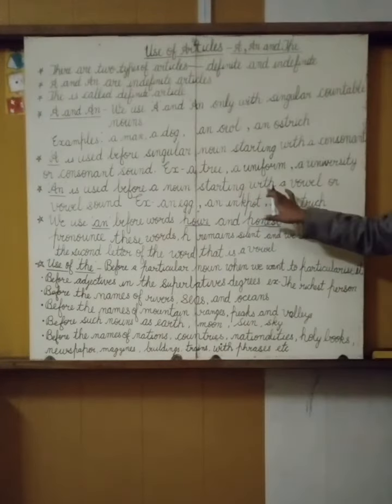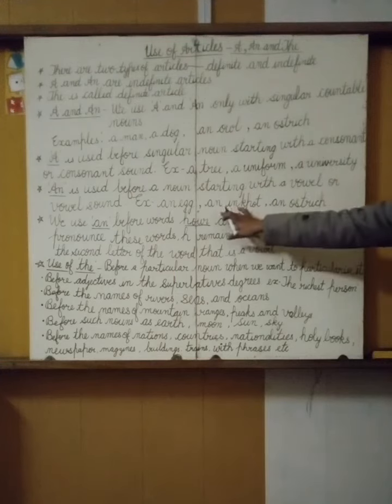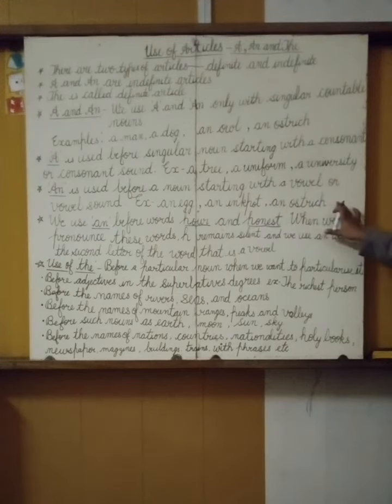An is used before a noun starting with a vowel or vowel sound. Example: an egg, an inkpot, an ostrich.